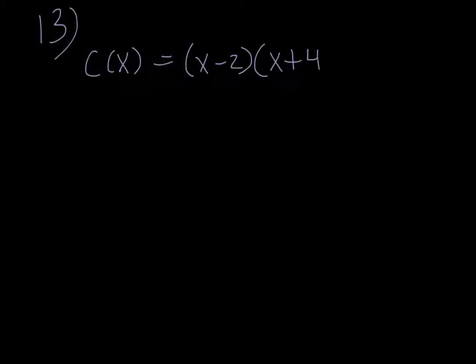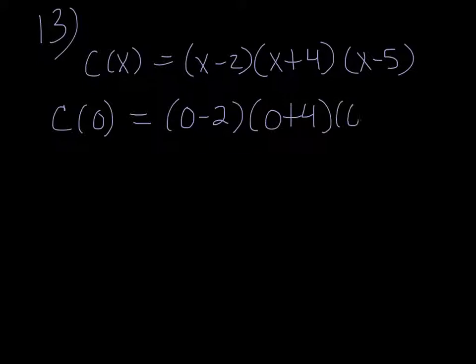Number 13. We need to take c of x which is equal to x minus 2 times x plus 4 times x minus 5. And we want its c-intercepts. So c-intercepts are where x equals 0. So plugging in 0 for x, we get 0 minus 2 times 0 plus 4 times 0 minus 5. So in other words, negative 2 times 4 is negative 8 times negative 5 would be 40. So there's one c-intercept and it's 0, 40.